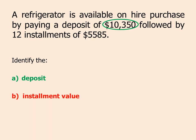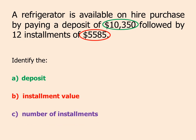Part b: identify the installment value. The installment value is the amount of money you're paying a little at a time — the monthly payment. The question says 12 installments of $5,585, so the installment value is $5,585. And part c, the number of installments: how many times are you going to pay that $5,585? 12 times.